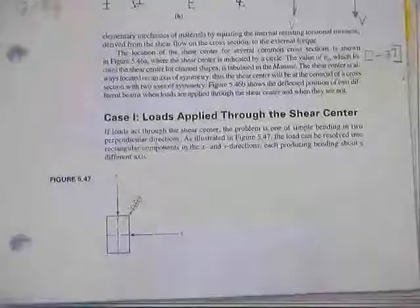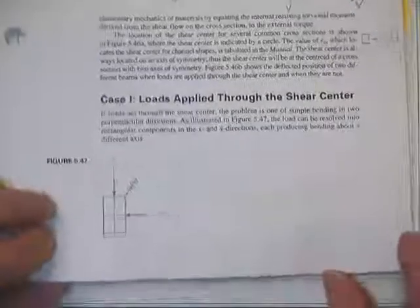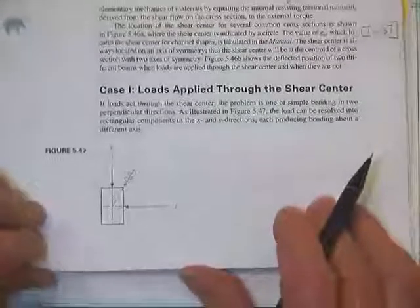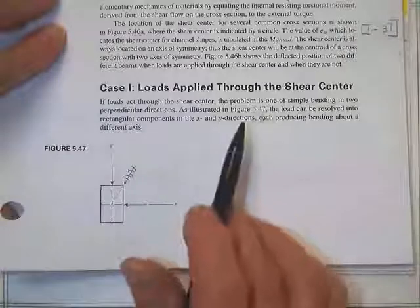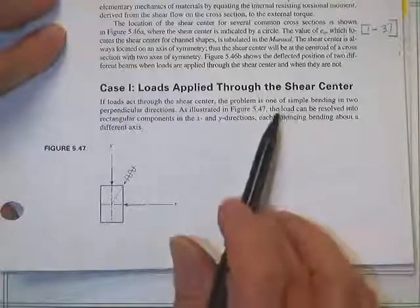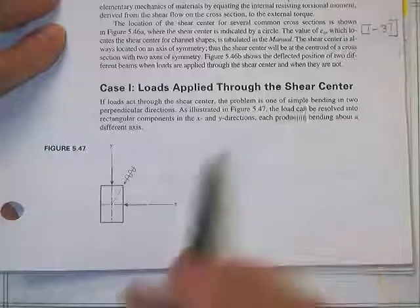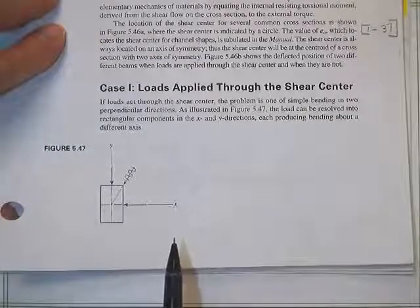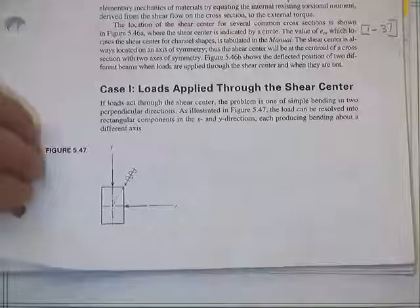It would be good if you always do case one: put the load through the shear center. If you don't, we can handle it but it requires more thought. If the load acts through the shear center, the beam is simply being bent about two axes, and all I have to do is design something bent about two axes.